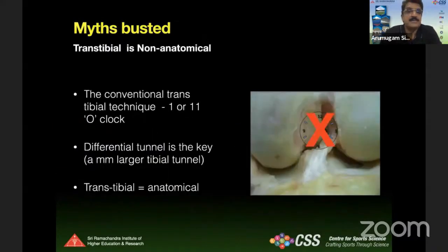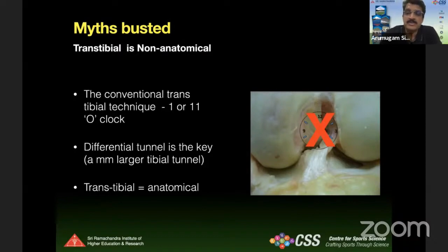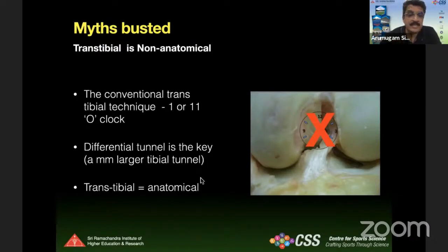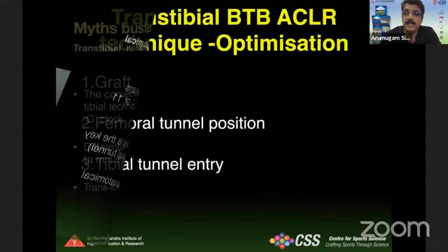The next question is why the hamstring is preferred over BTB. Traditionally, we do the BTB graft with a trans-tibial technique, and it has been quoted that the trans-tibial technique is non-anatomical — but it is not so. When we did the conventional trans-tibial, we aimed at the 1 o'clock or 11 o'clock position, which we have now given up. We now select high or low on the femoral footprint. The key is differential tunneling: a larger tibial tunnel allows you to rotate your femoral jig and get the anatomical point, so trans-tibial can be optimized for anatomical tunnels.